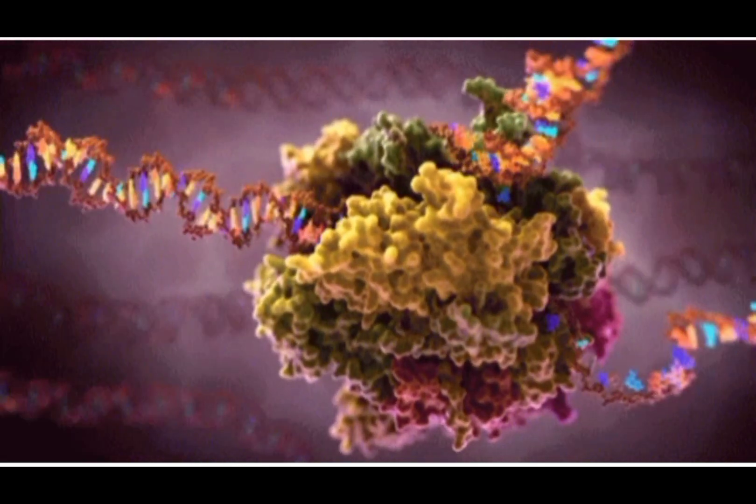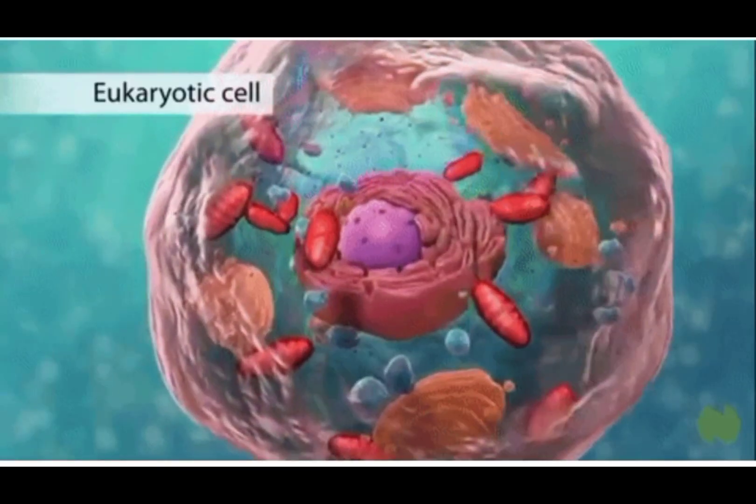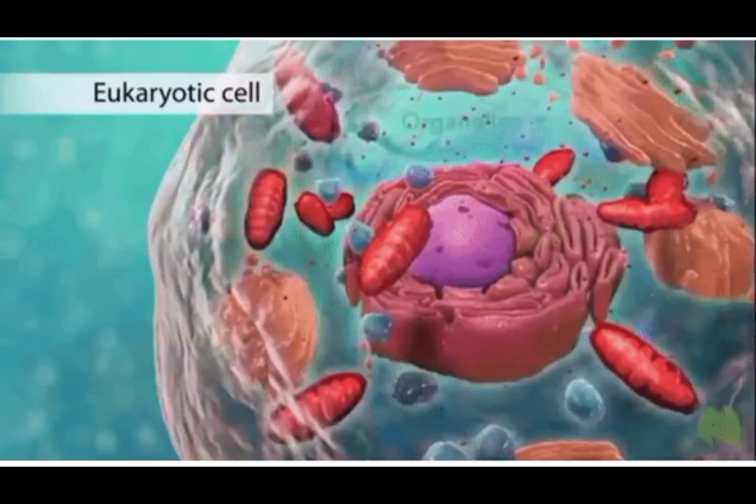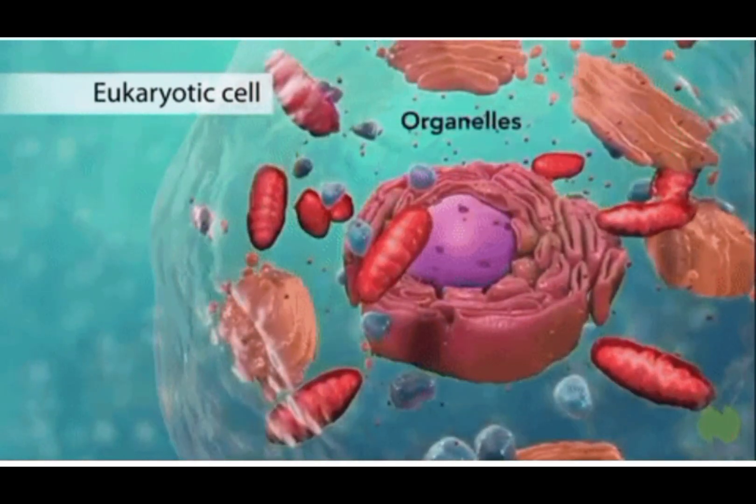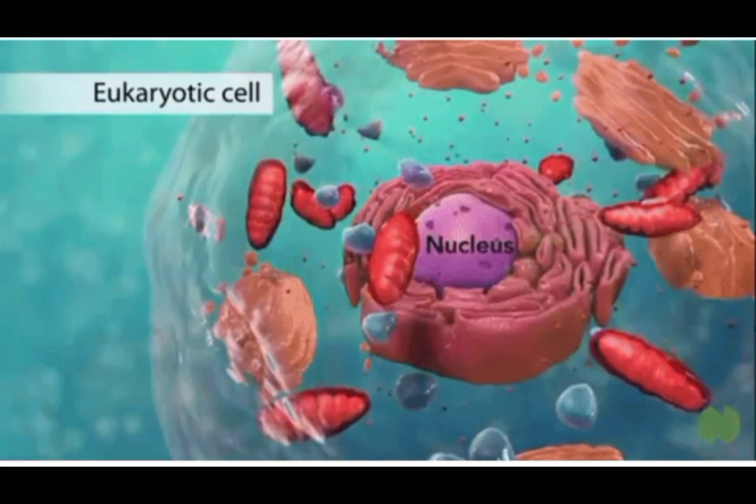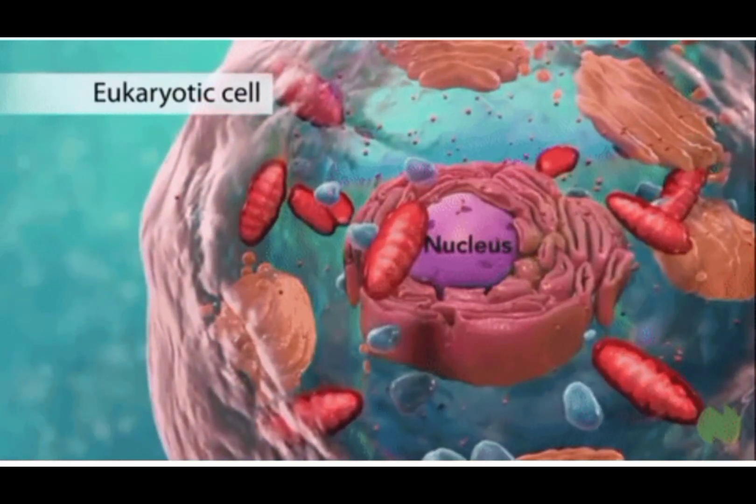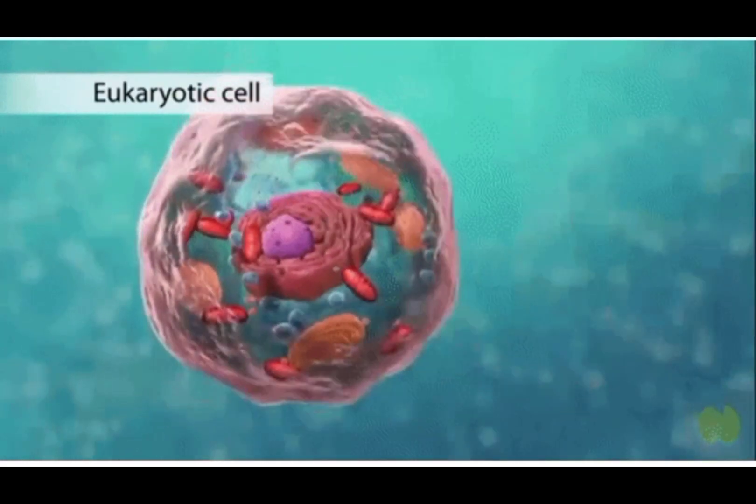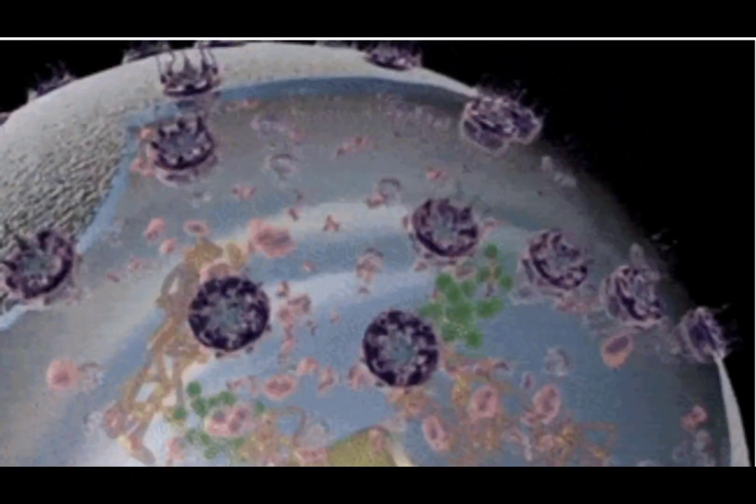Nucleus was discovered by Robert Brown in 1831. It is the most important and prominent part of the cell which controls all the activities of the cell. It is commonly spherical in shape. In some cells it is lobed in structure.